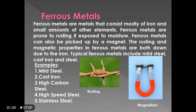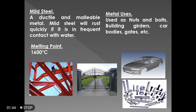Now we are going to see the examples of ferrous metals one by one. First is mild steel. Mild steel is ductile and malleable, and when it comes in frequent contact with water it gets rusted. Its melting point is 600 degrees Celsius. The applications of mild steel are nuts and bolts, constructions, and gates.